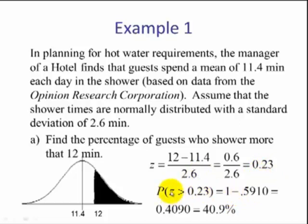Using Table 5, if we find the area of a z-score being greater than 0.23, we do 1 minus 0.5910, which is 0.4090. Since the original problem asked what percentage, we change this to a percent and we get 40.9%.